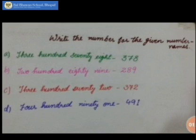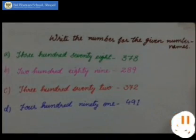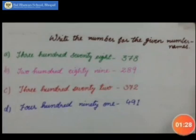C — let's read C: 372. The number for 372 is 372. D is 491 — the number is 491. So like that, you have to write the numbers for the given number names. AM — 451.